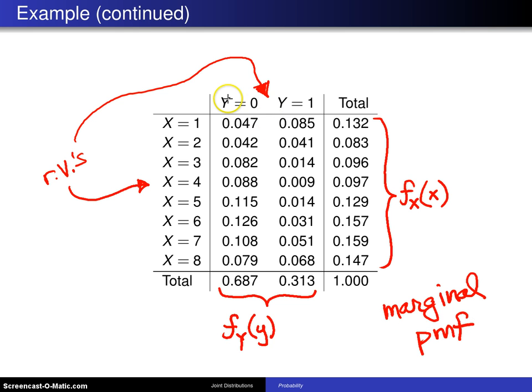So these are marginal probability mass functions. Why probability mass functions? Because these are discrete random variables. These tell you the distribution of one of the variables, ignoring the other variable. Now, on the inside of this table are values, which we will later pin down as F of x, y. And these values all, of course, sum to one. And this function up here is known as the joint probability mass function. And, of course, it's a joint probability mass function because the two random variables are discrete.